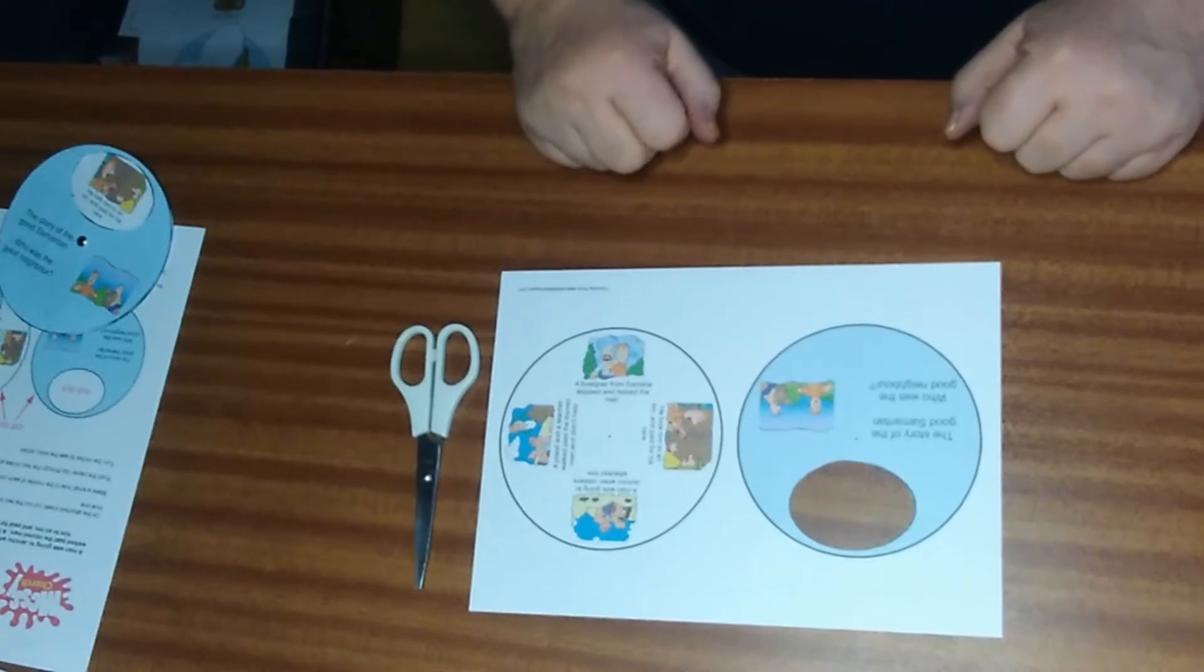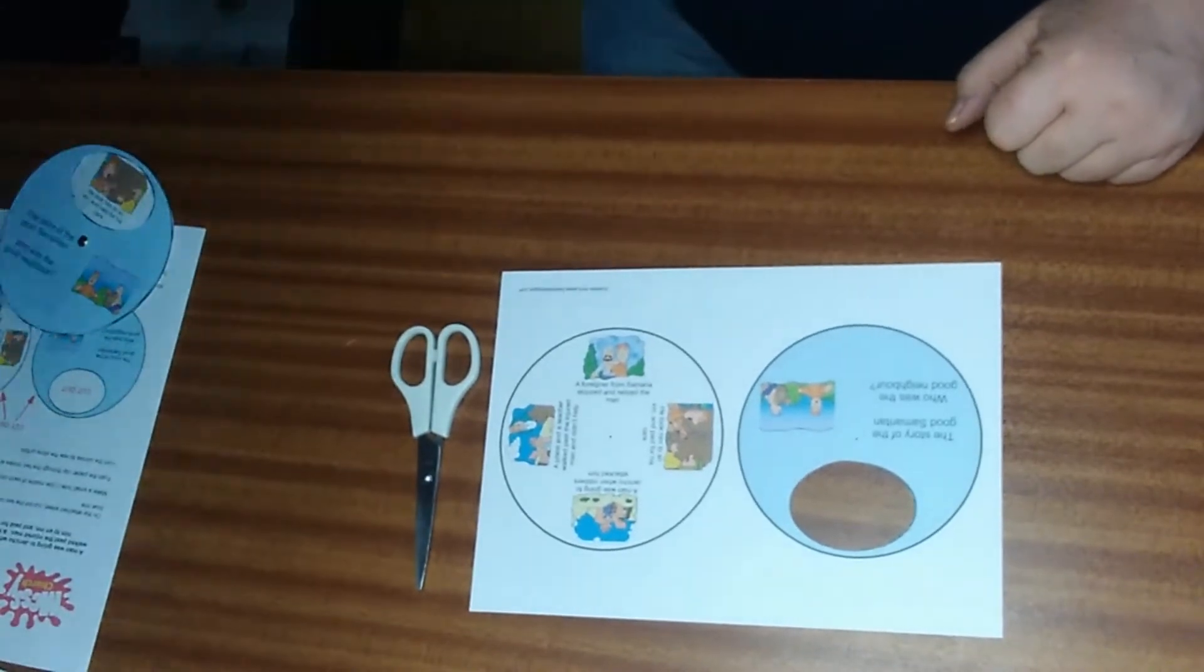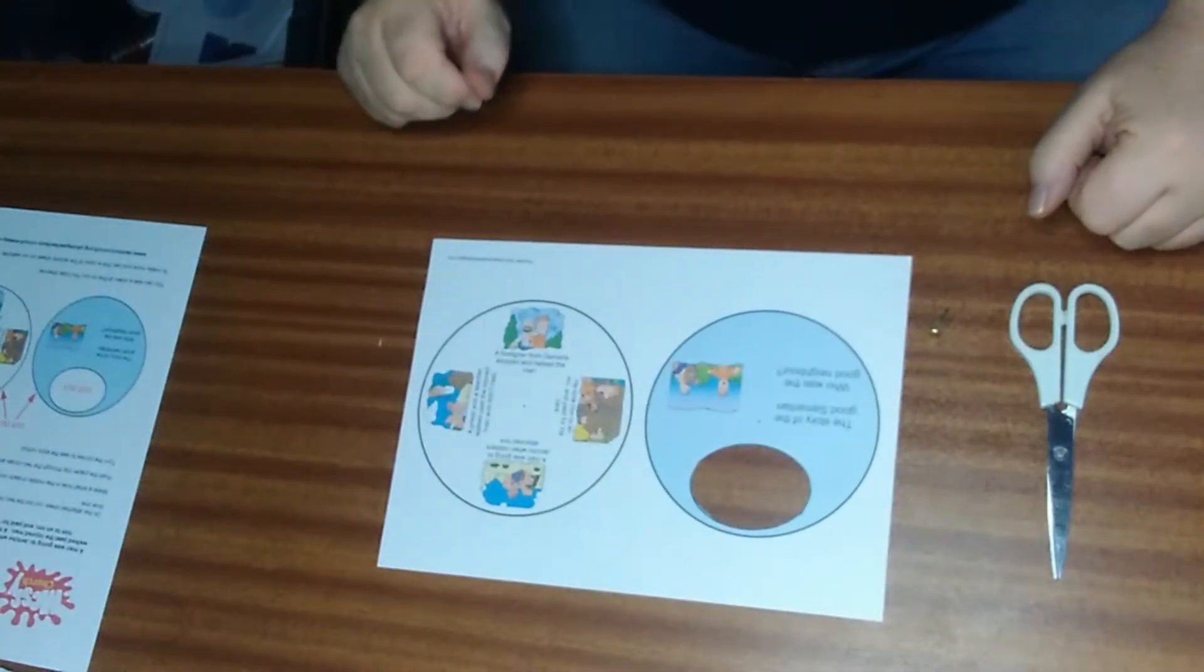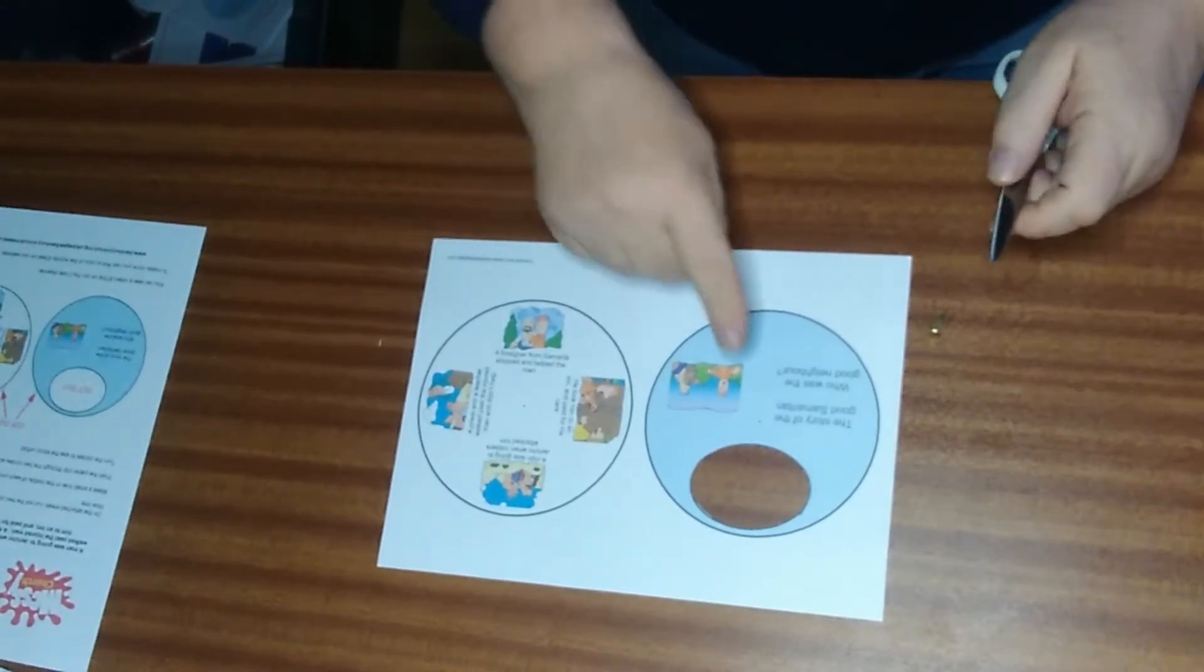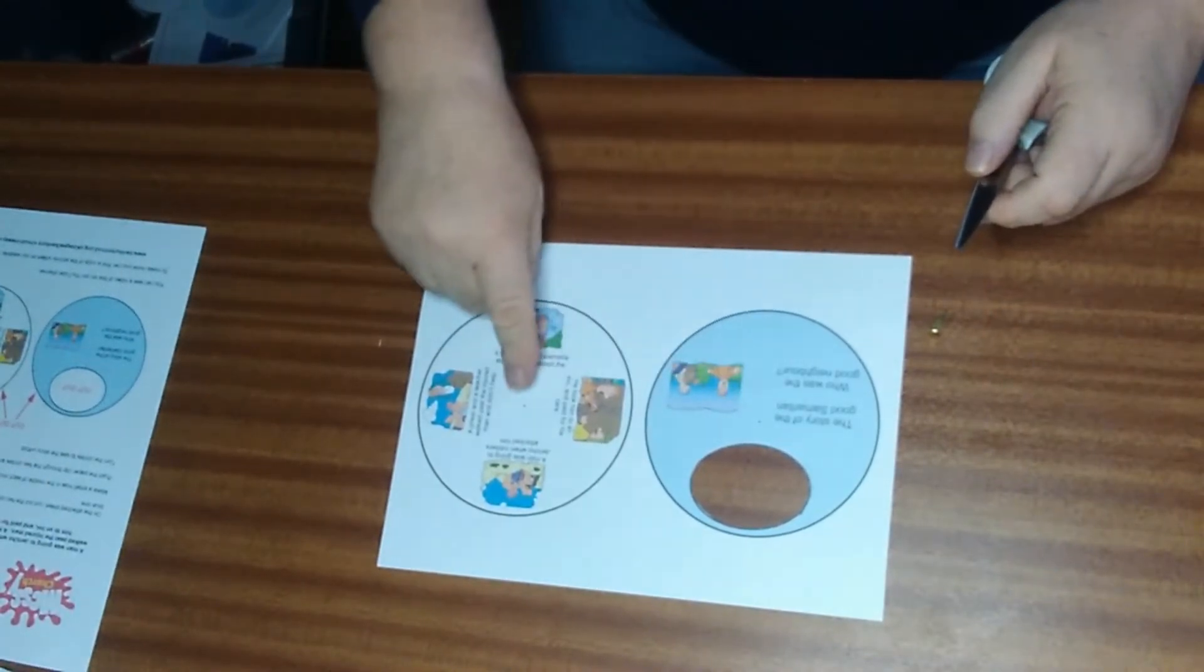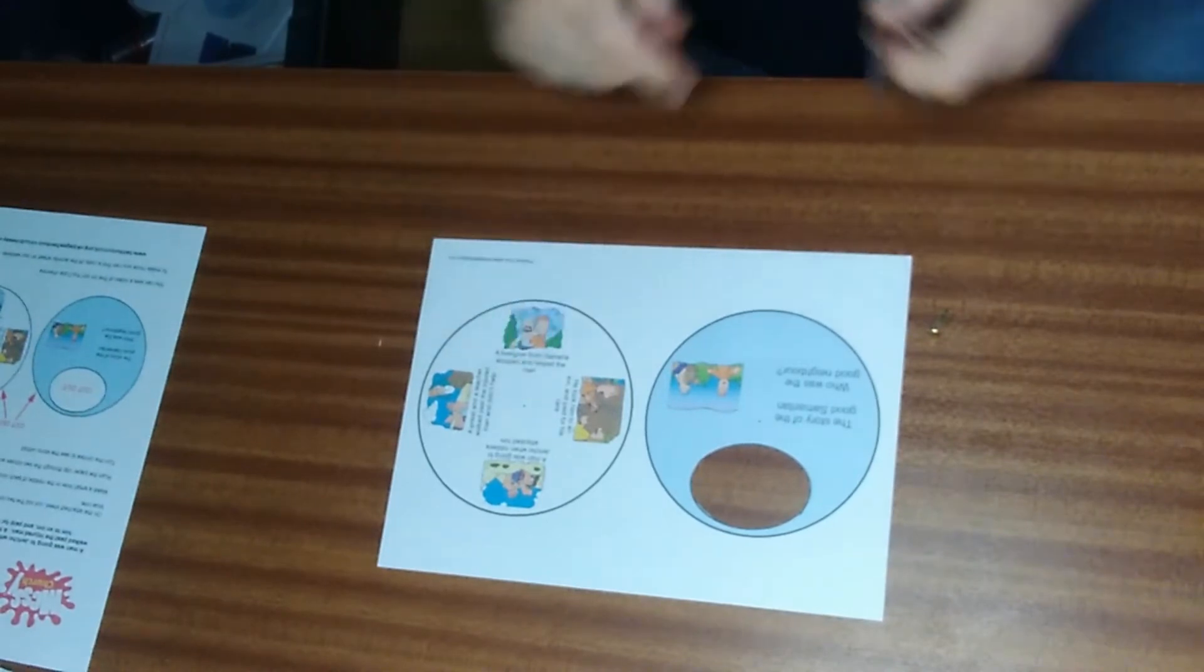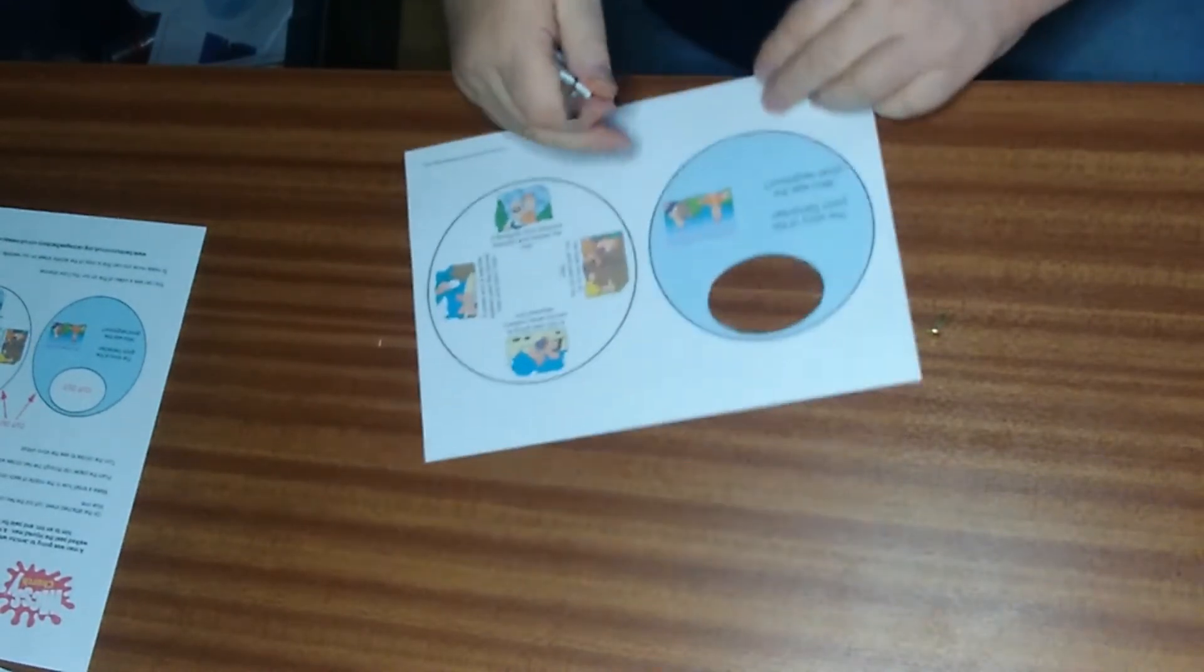In the middle of each circle, there's a little black dot. There's one there, and one there. We make a hole where the black dot is.